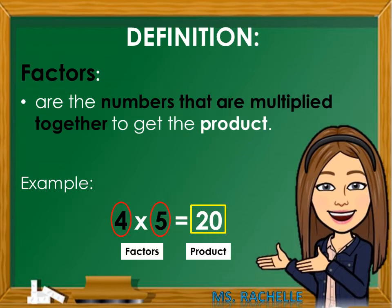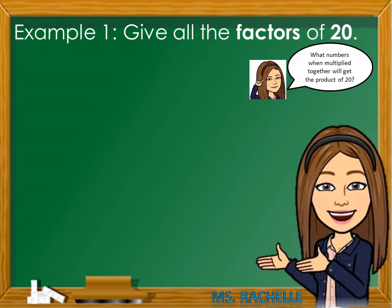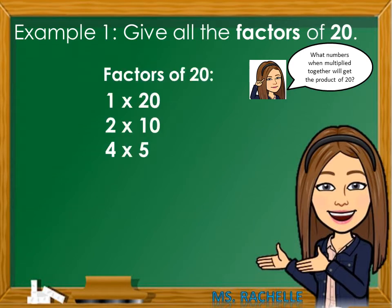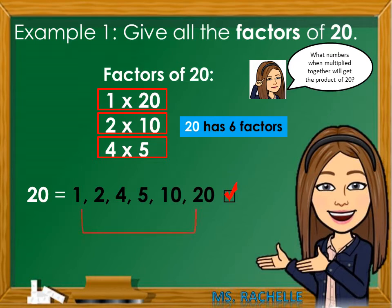Let's have more examples. Example number 1: Give all the factors of 20. Think, what numbers when multiplied together will get the product of 20? The factors of 20 are 1 times 20, 2 times 10, 4 times 5. These are the only possible combinations to get the product of 20. Notice that 20 has 6 factors: 1, 2, 4, 5, 10, 20.